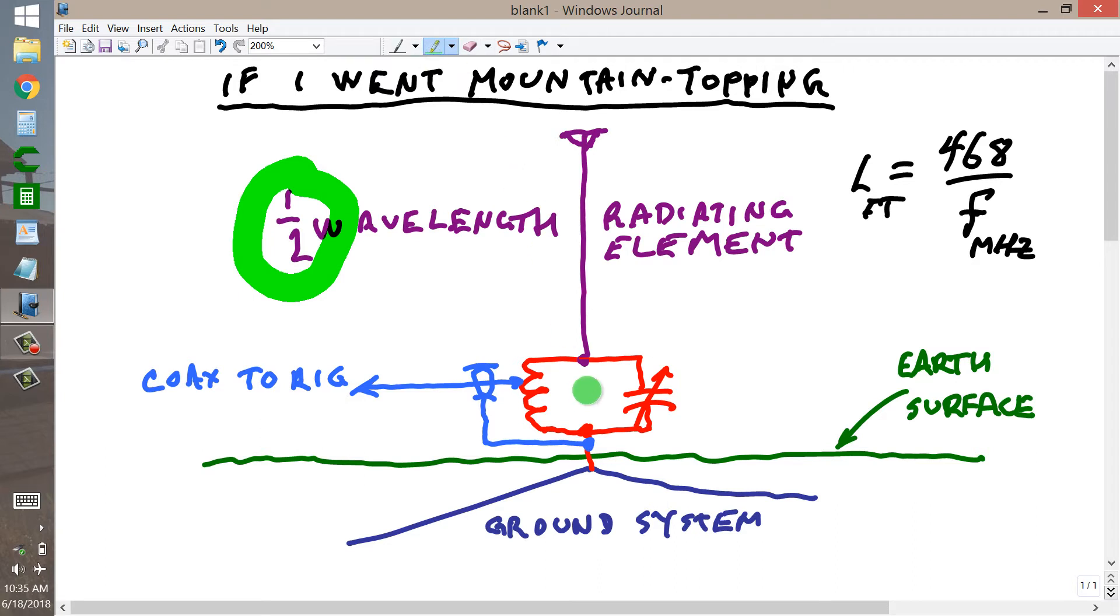Then you have a resonant tank circuit, an inductance-capacitance circuit tuned to resonance at the frequency that you want to work at, and a roller inductor, preferably here, so that you can vary the tap at which the coax to the radio intercepts this coil. So you adjust this for resonance at the operating frequency and then adjust this until you get a 1 to 1 standing wave ratio here.